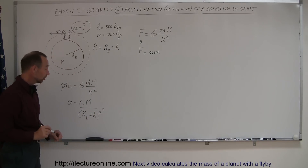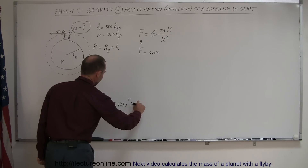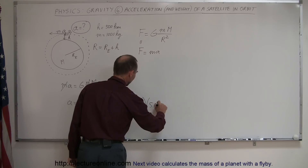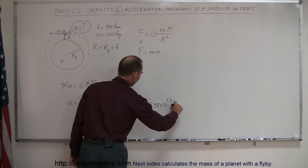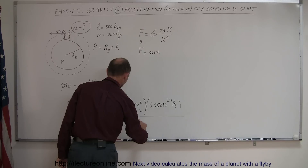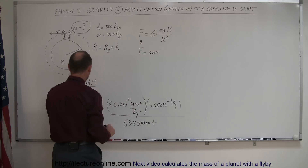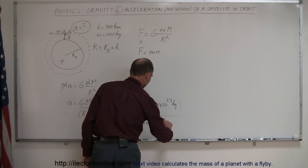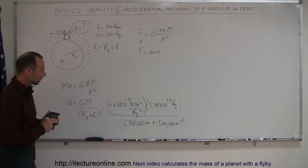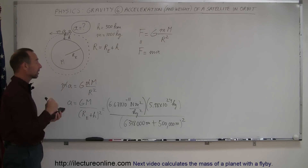Let's plug in the numbers: 6.67 times 10 to the minus 11 newton meters squared per kilogram squared, multiplied by the mass of the Earth, 5.98 times 10 to the 24 kilograms, divided by the sum of the Earth's radius — 6,378,000 meters — plus the height of 500,000 meters, all squared. On the surface of the Earth the acceleration is 9.8 m/s², so let's see what it is 500 kilometers above the Earth.